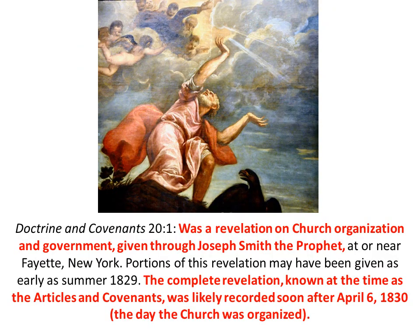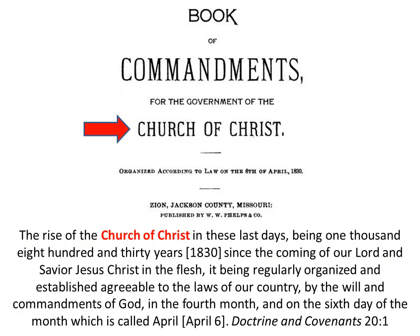The name Church of Christ was given to Joseph Smith in a revelation in Doctrine and Covenants 20, verse 1. It was a revelation on church organization and government given through the prophet Joseph Smith. The complete revelation, known at the time as the Articles and Covenants, was likely recorded soon after April 6, 1830, the day the church was organized. So soon after April 6, 1830, he received a revelation and the name was Church of Christ. Here is the actual scripture, Doctrine and Covenants chapter 20, verse 1: 'The rise of the church of Christ in these last days, being 1,830 years since the coming of our Lord.' That was the name given to Joseph by revelation.